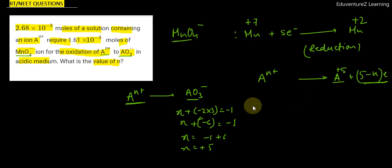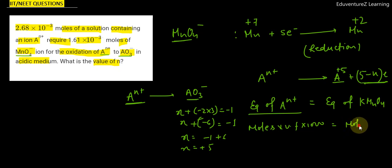MnO2- is given in the case of KMNO4. If you want to use the concept of moles into valency factor, the condition is moles of An+ into valency factor equals moles of KMNO4 into valency factor.